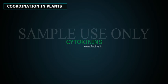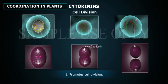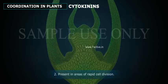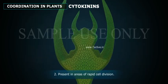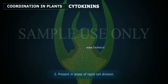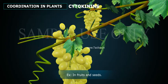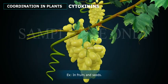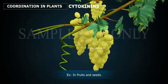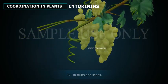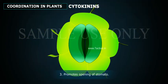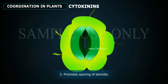Cytokinins: 1. Cytokinins promote cell division. 2. They are present in areas of rapid cell division, for example in fruits and seeds. 3. Cytokinins also promote the opening of stomata.